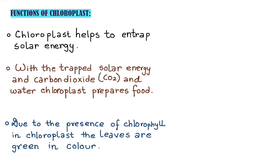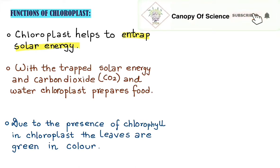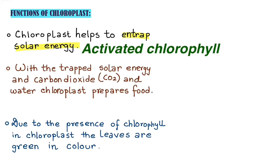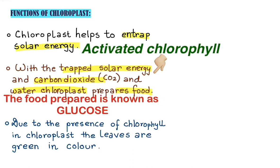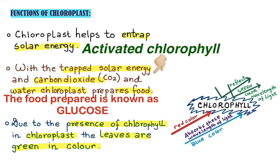So finally, let's discuss the functions of chloroplast. Chloroplast helps to entrap solar energy — this function is done by chlorophyll present inside the chloroplast. Once the chlorophyll entraps solar energy, it gets excited or activated. Then the chlorophyll, with the trapped solar energy, carbon dioxide, and water, prepares food for the plant. The food which is prepared is called glucose. Finally, due to the presence of chlorophyll, the leaves appear green in colour because chlorophyll reflects away the green wavelength of light and absorbs the red and blue wavelengths of light.